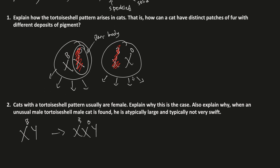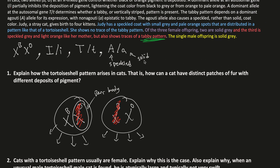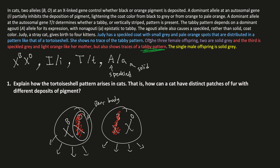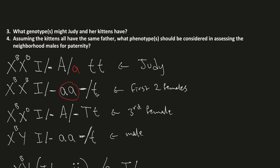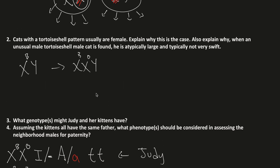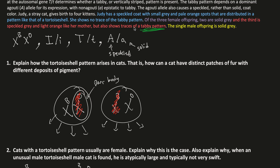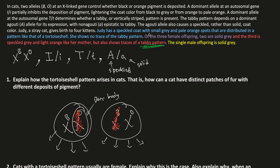This is an example of multiple alleles all affecting the same phenotype. To clarify a correction: the third female actually does have a tabby pattern — that was a mistake earlier. This is exactly why we highlight these details carefully, to avoid making these little errors.